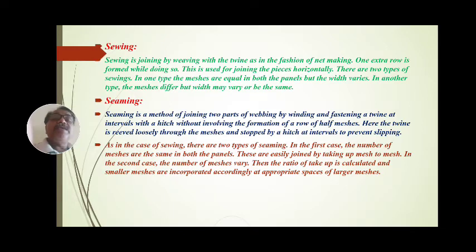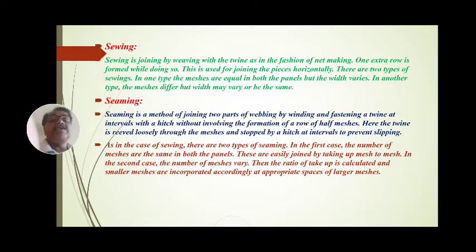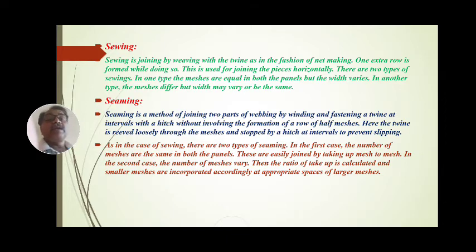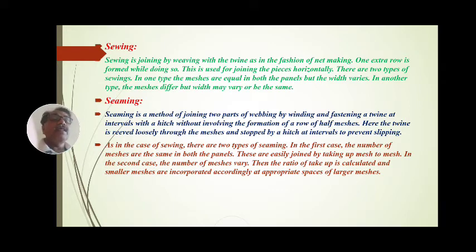What is the seaming method? Seaming is a method of joining webbing. Seaming is joining by weaving with the twine as in the fashion of net making. One extra row is formed while doing this seaming. This is used for joining the pieces horizontally. There are two types of seaming.